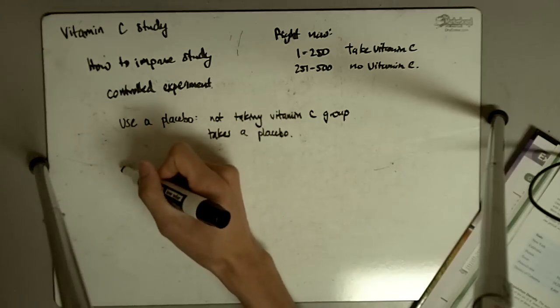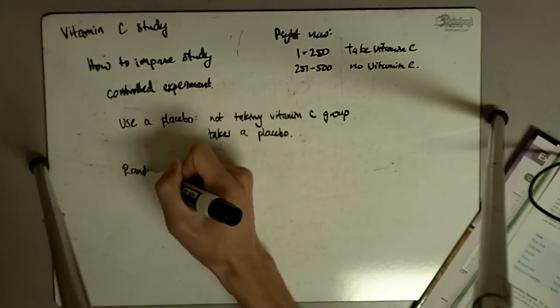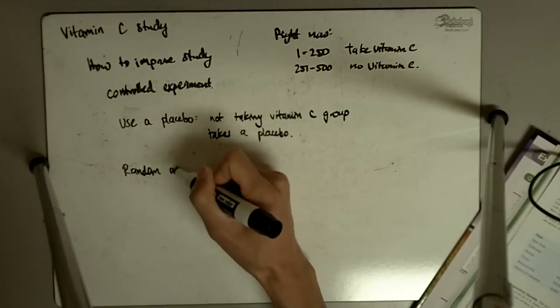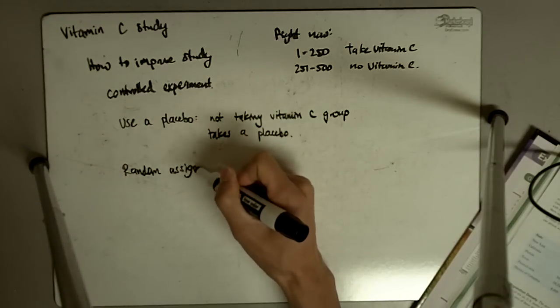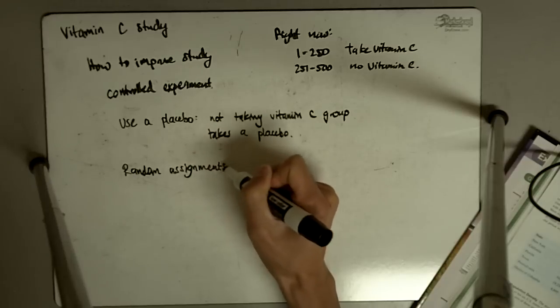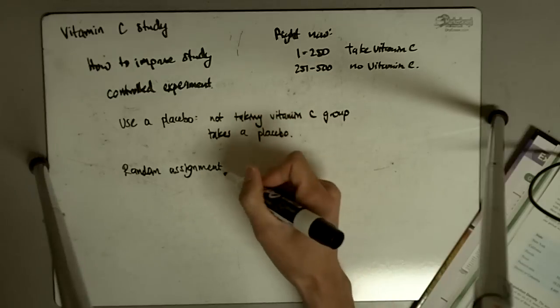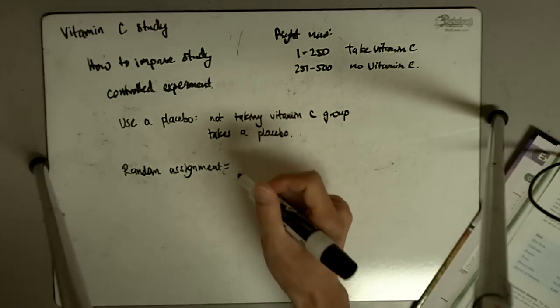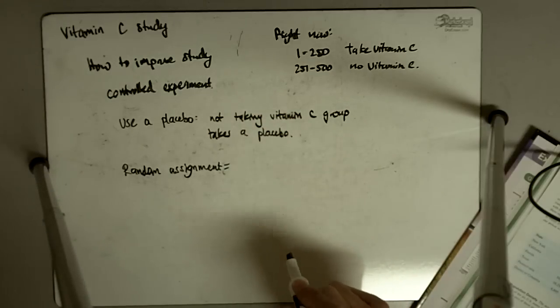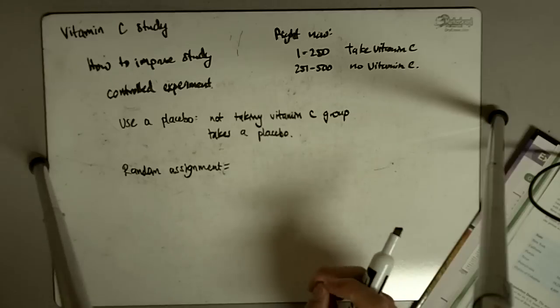Use a placebo. Random assignment is also going to help. Random assignment is always something good. So rather than just saying numbers 1 through 250, they could flip a coin and if the person gets heads, they're assigned to vitamin C. And if they flip tails, then they're assigned to placebo.